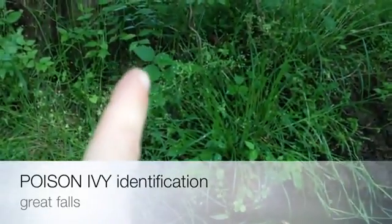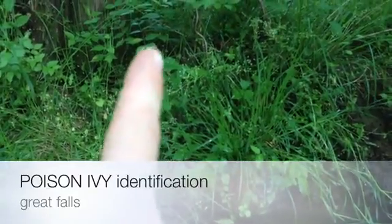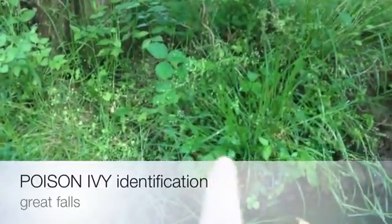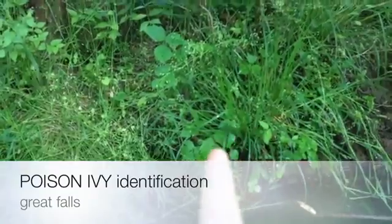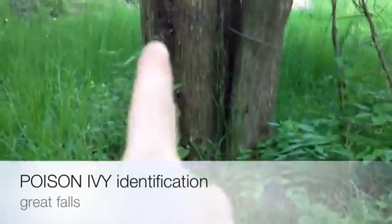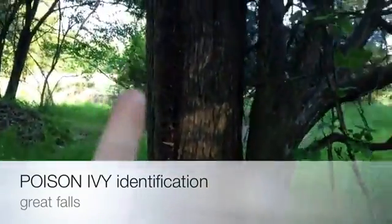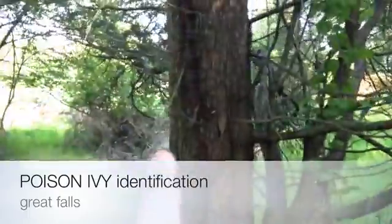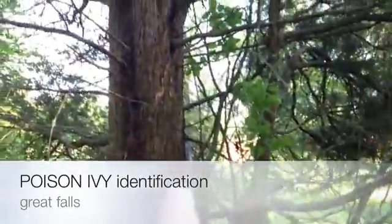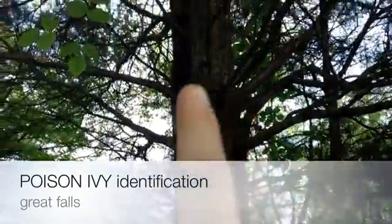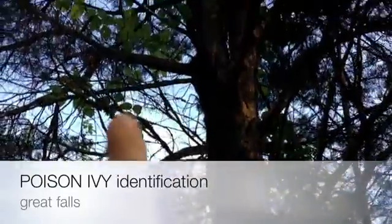So once again, if you see right here — this is poison ivy, these three leaves right here. And then down here is poison ivy. And then this root that goes up this tree is poison ivy. This is an evergreen tree, but if you look up carefully, all of these green leaves are poison ivy.